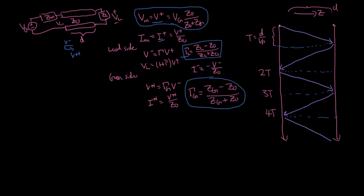The actual voltage values corresponding to these lines: initially going in, that's your V plus. Once you get your reflection, that's V minus, which equals Gamma L times V plus. Then it reflects off the generator, giving V plus plus, equal to Gamma G times Gamma L times V plus. Then reflecting off the load again gives V minus minus, equal to Gamma G times Gamma L squared times V plus. And V plus plus plus equals Gamma G squared times Gamma L squared times V plus, and so on.